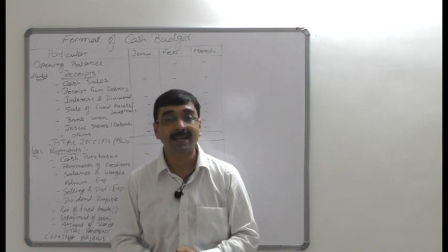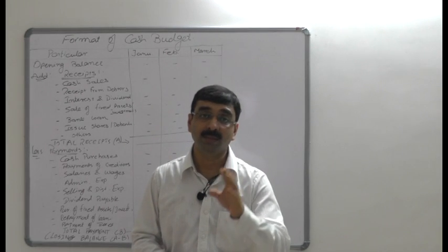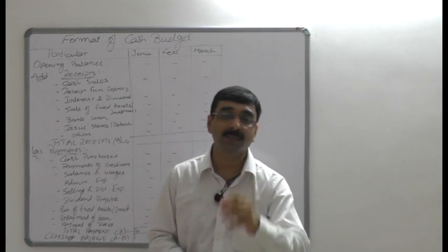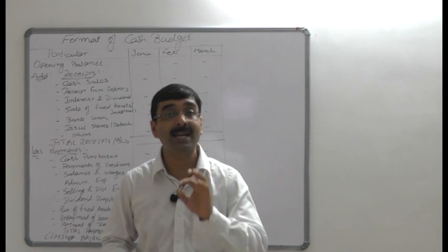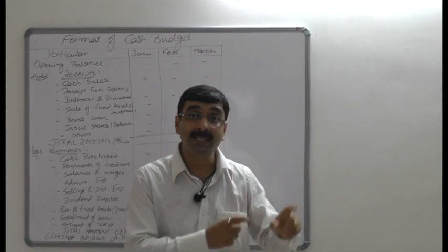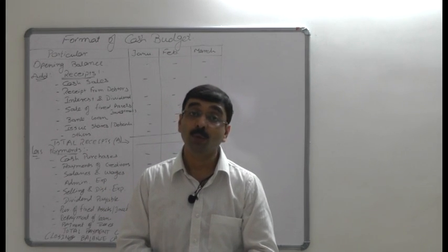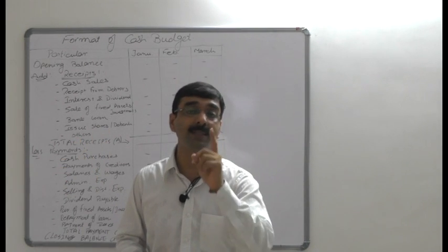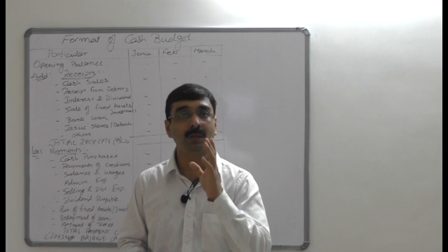Moving to another method — flexibility. Under flexibility, there are two methods: fixed budget and flexible budget. A fixed budget is prepared for one level of output and one set of conditions. It is also known as a static budget, where targets are tightly fixed. According to CIMA, a budget which is designed to remain unchanged irrespective of the level of activity attained is called a fixed budget.